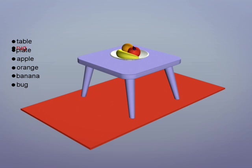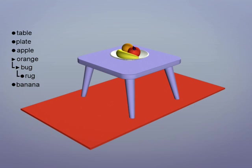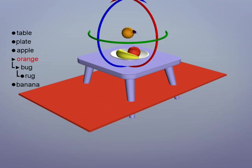So let's parent the rug to the bug and the bug to the orange. Now the bug affects the rug and the orange affects both the rug and the bug below.